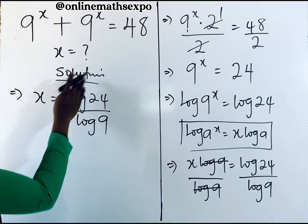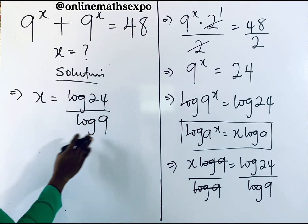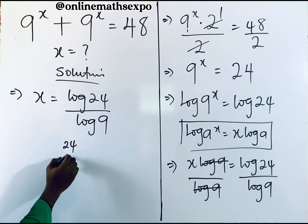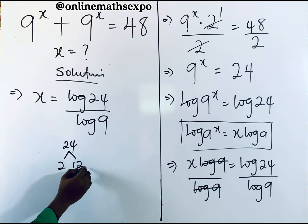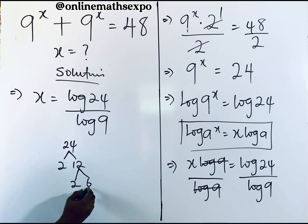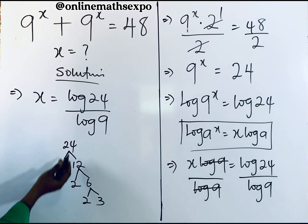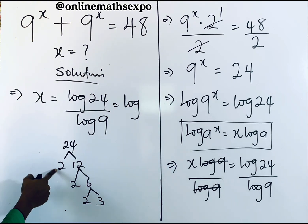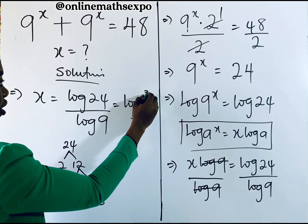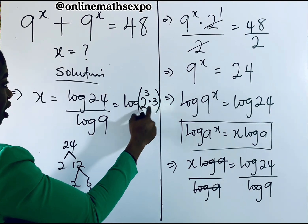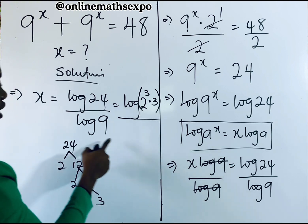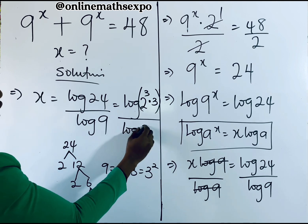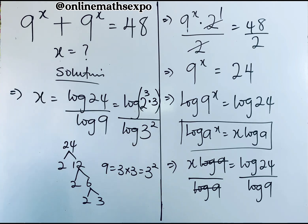Should we leave it at this point? No, we have to simplify this answer. We know that 24 is the same as 2 multiplied by 12, 12 is 2 multiplied by 6, and 6 is 2 multiplied by 3. So 24 is 2 cubed multiplied by 3. And 9 is 3 times 3, which is 3 squared.